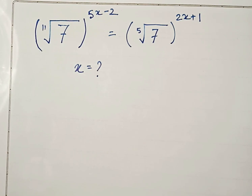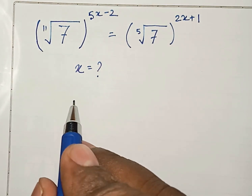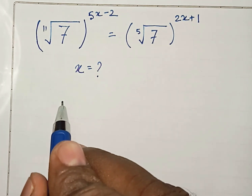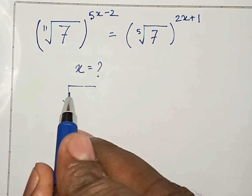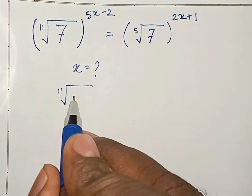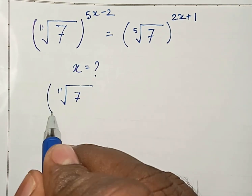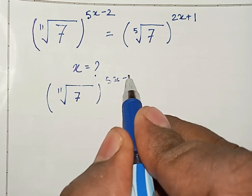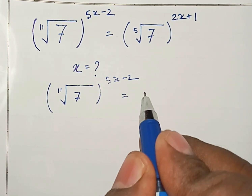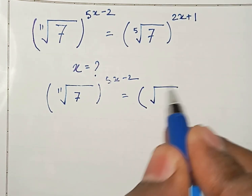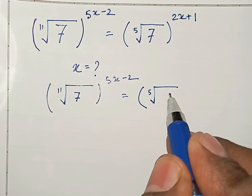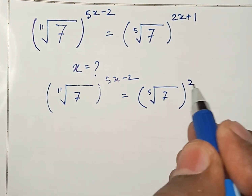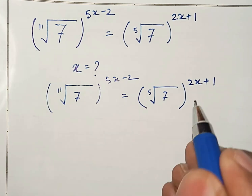Today's topic of discussion is how we can find the value of x from this problem. We have the 11th root of 7 to the power 5x minus 2, and that equals the 5th root of 7 to the power 2x plus 1.